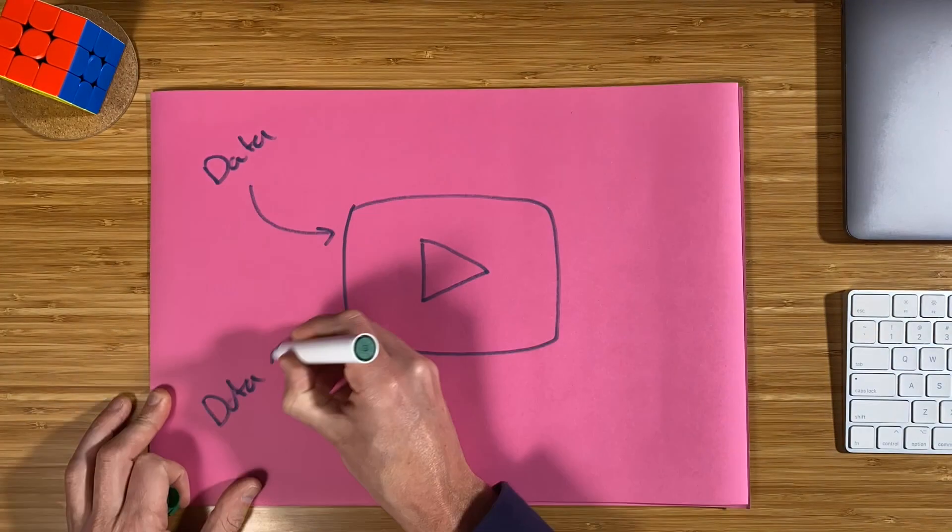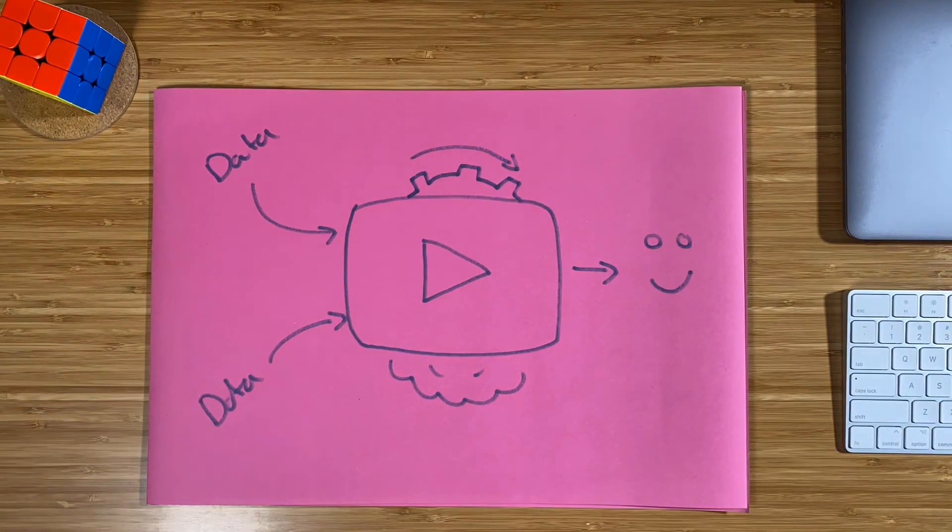And pretty much every computer program that we use follows that kind of routine. We start somewhere, we look for inputs, we turn some data around, we provide the outputs. Even YouTube, the platform that we're using to watch this video, essentially works on that principle just at a much bigger scale. Lots of data being added and subtracted and shifted around, inputs being processed and outputs being provided. That's how computer programs work and we can get software developers to create the code that does that.